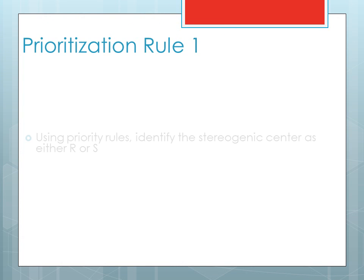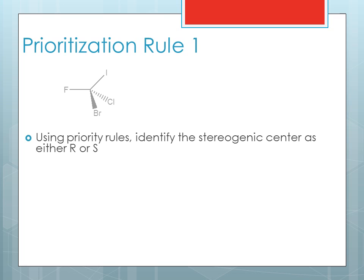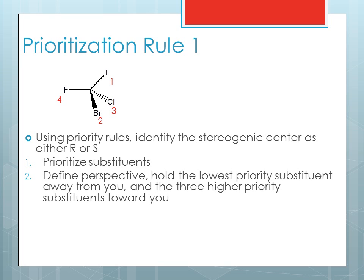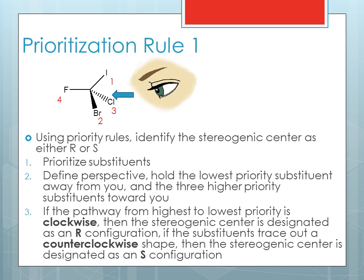Here's an example of the first prioritization rule. Using the priority rules, identify this stereogenic center as either R or S. First, prioritize the substituents — your priority numbers should look like this. Next, define the perspective: hold the lowest priority substituent away from you and the three higher priority substituents towards you. If the pathway from the highest to lowest priority is clockwise, then the stereogenic center is designated as R. If the substituents trace out a counterclockwise shape, then the stereogenic center is designated as S.